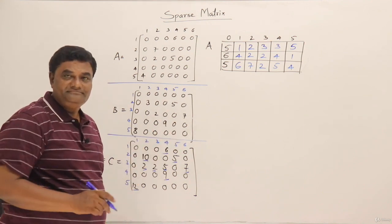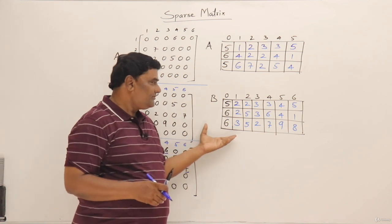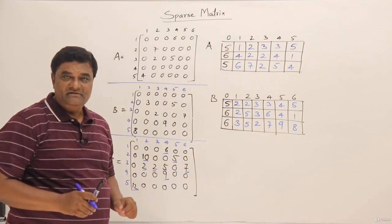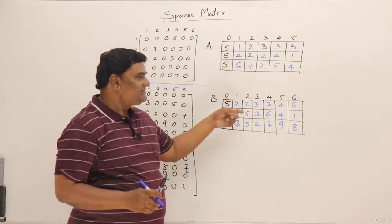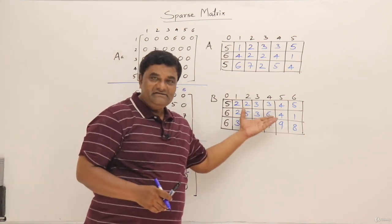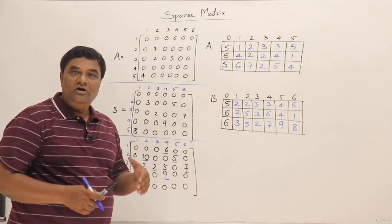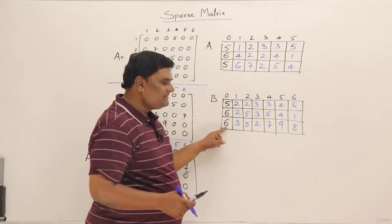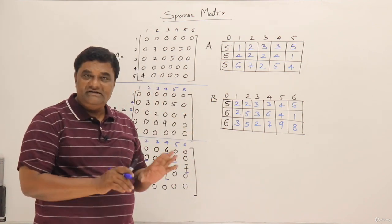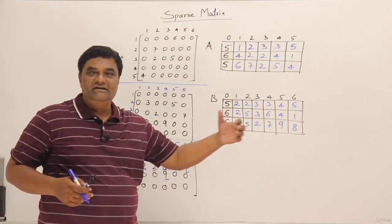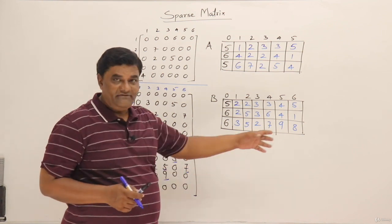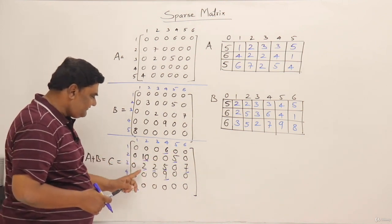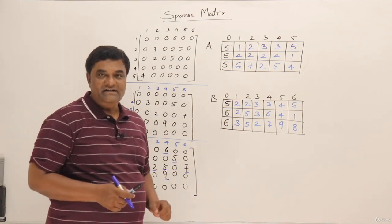Now for matrix B, I also have a coordinate list representation with 5 by 6 dimensions and 6 nonzero elements. Now let us see how addition can be done from these two representations. We need one more array of the same type for C, but we don't know how many elements it will have. The maximum would be 5 plus 6 equals 11 elements if none of them match. But we already know the answer has 9 nonzero elements, so I will take size 9.